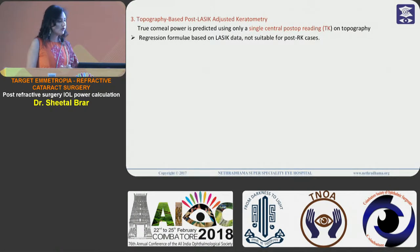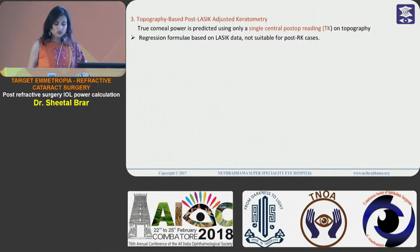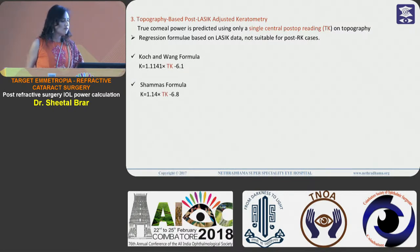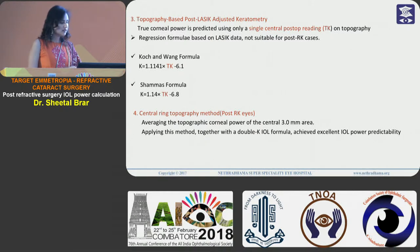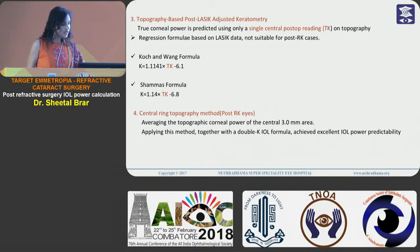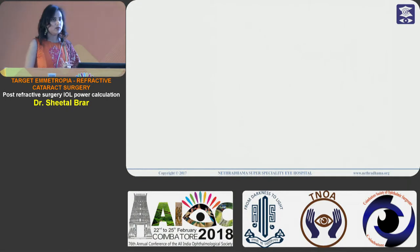Next are the topography-based post-LASIK adjusted keratometry formulae. These are regression formulae based on LASIK data, hence not suitable for post-RK eyes. We have the Koch and Wang formula and the Shamas formula. Then we have the central ring topography method, which is suitable for post-RK eyes. In this method, we average the topographic corneal power of the central three millimeter zone, and when applied with a double-K IOL formula, it provides excellent IOL predictability.